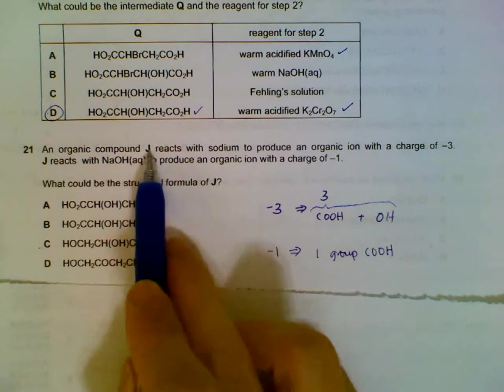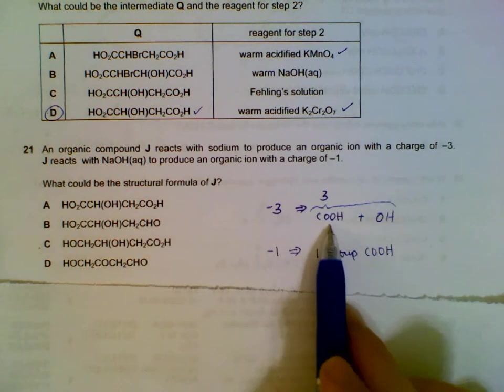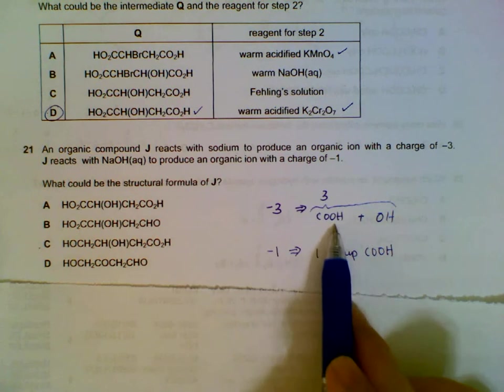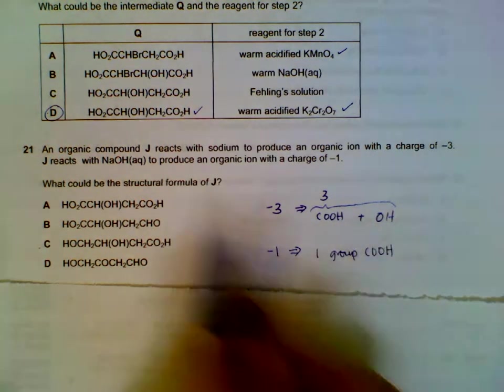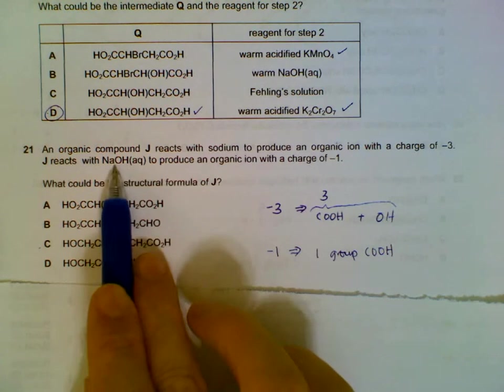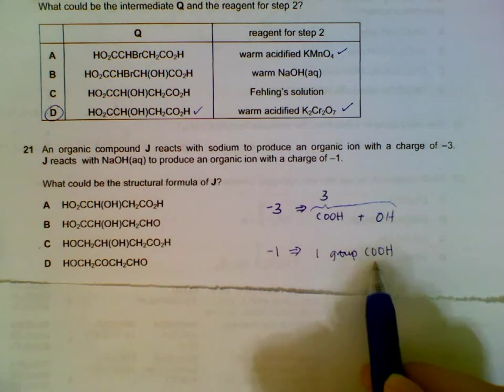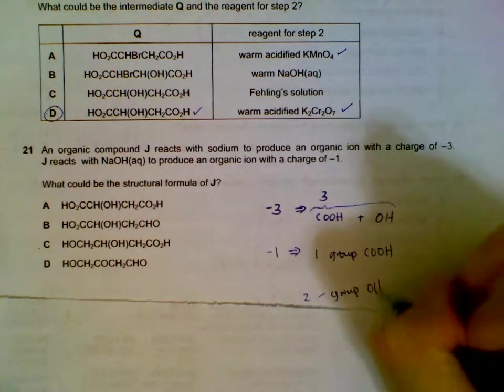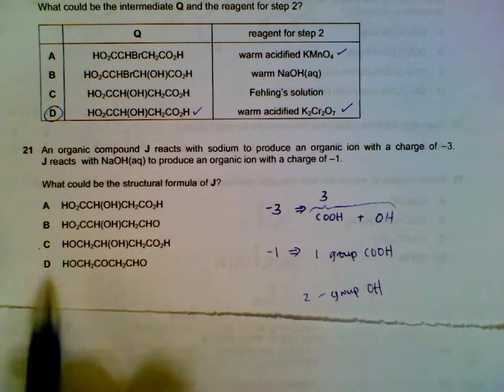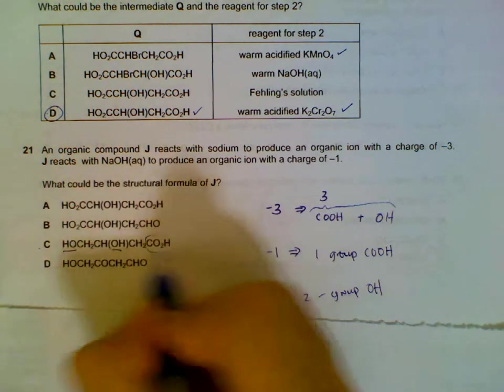Question 21: compound J reacts with sodium and we get a minus 3 charge. What it means is we have a total of three groups that is made of carboxylate and hydroxyl. How much of each we can't be sure, but total is three. And then we are told that it reacts with sodium hydroxide to produce a minus one charge. That means it only has one group of COOH. So one group of COOH and two groups of OH, that's the information we can gather. So if you look at the options, C has two groups of OH here and one group of COOH.